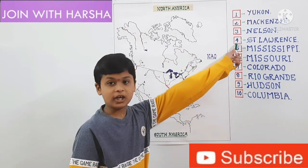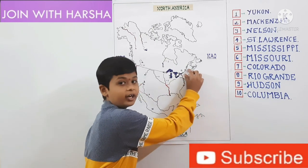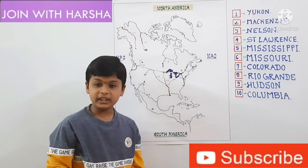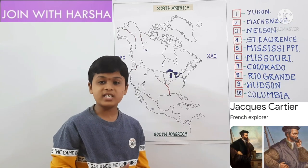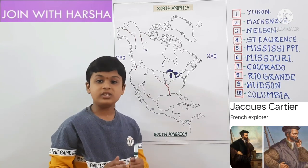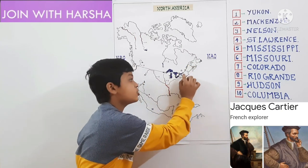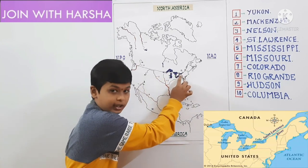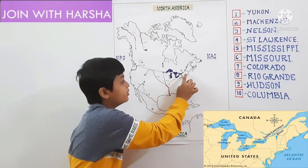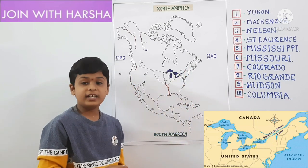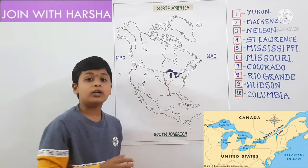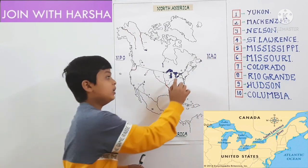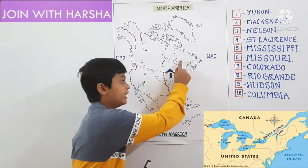Next one is St. Lawrence River. This is the Gulf of St. Lawrence and the North Atlantic Ocean. In 1534, French explorer Jacques Cartier was the first European who discovered the Gulf of St. Lawrence and the shores of St. Lawrence River. Lake Ontario is the source of St. Lawrence River. St. Lawrence River connects all five Great Lakes with the Atlantic Ocean. This is the border between Canada and USA.